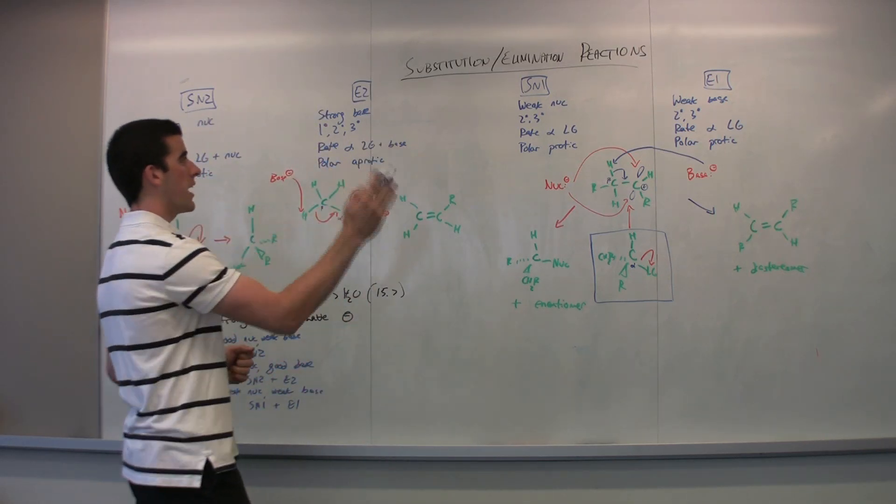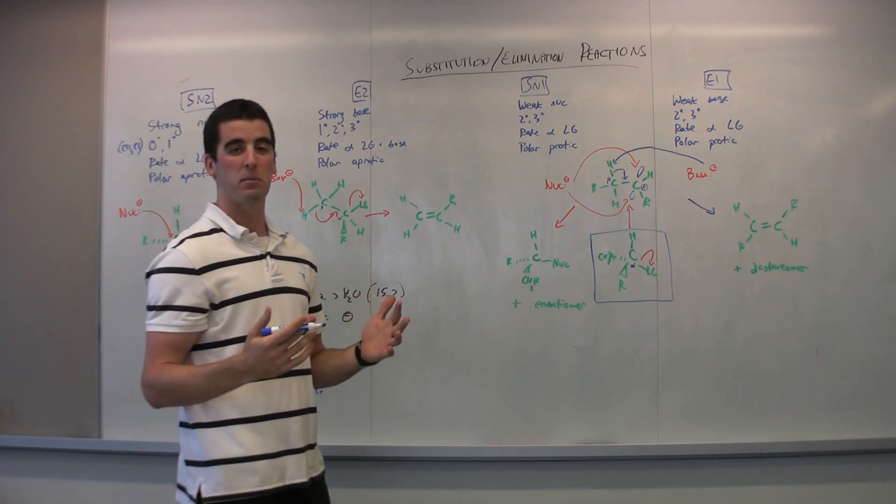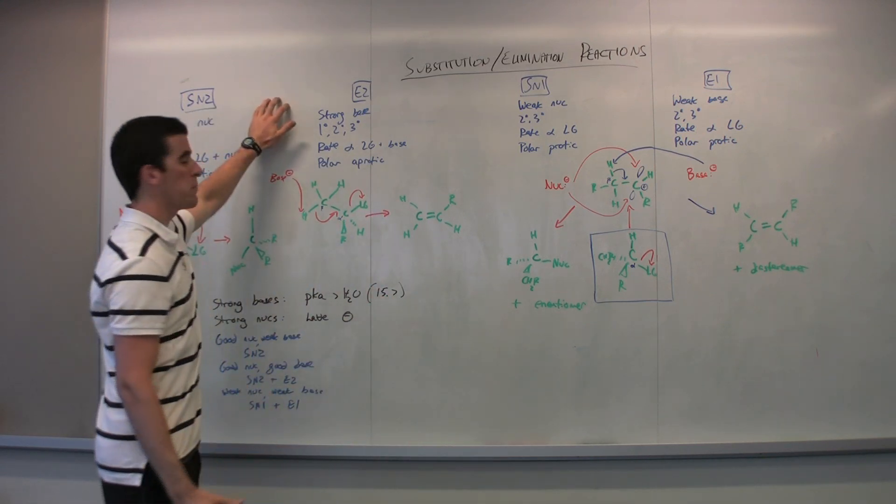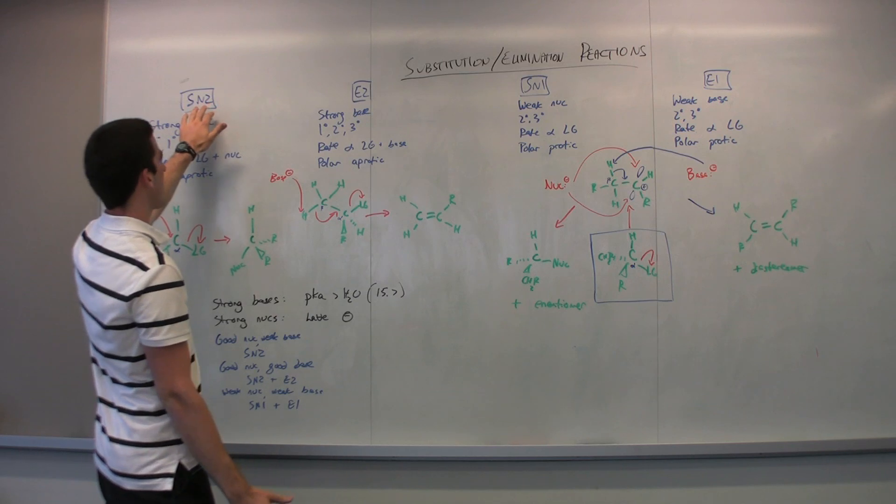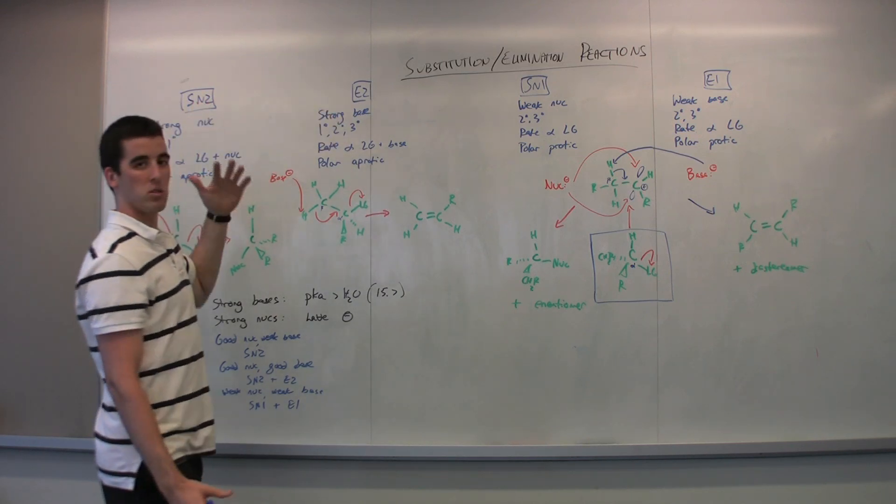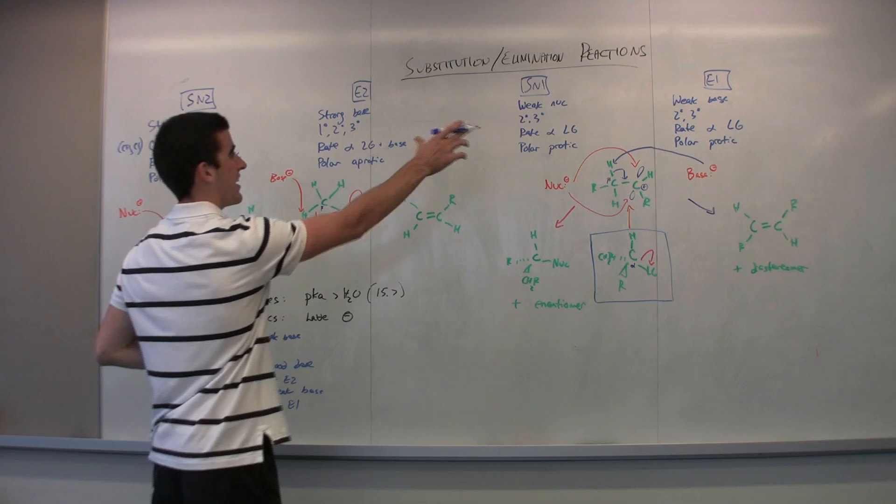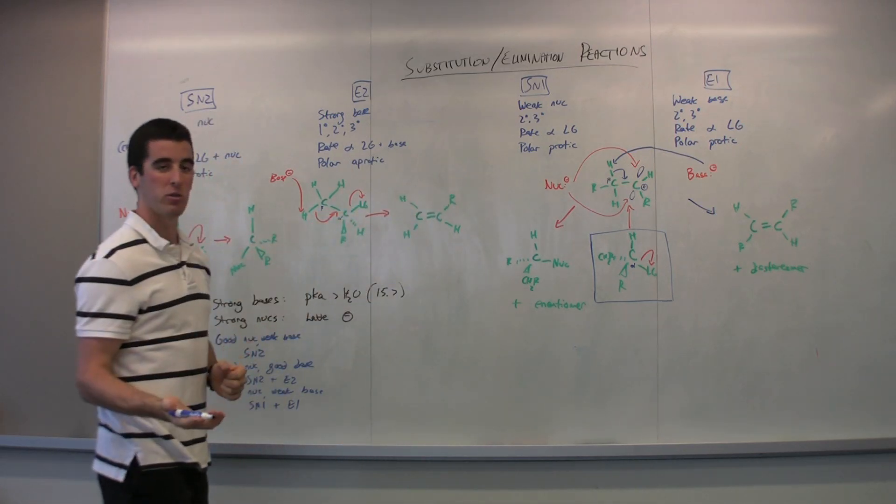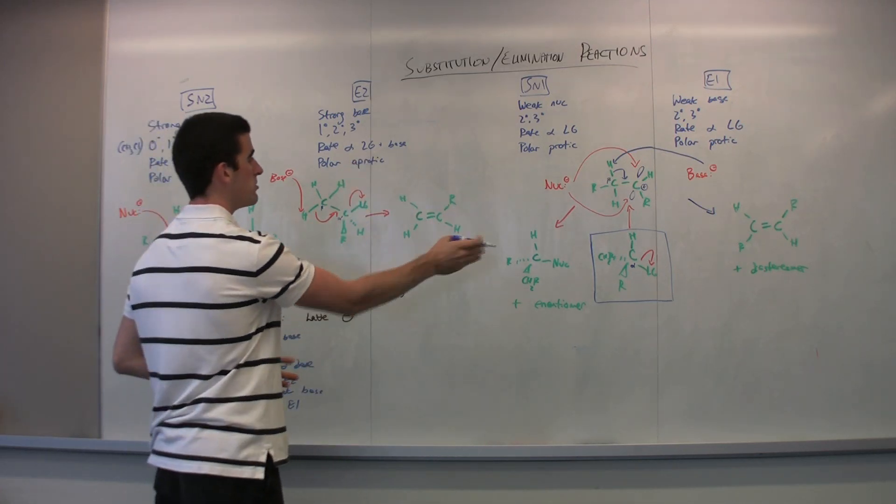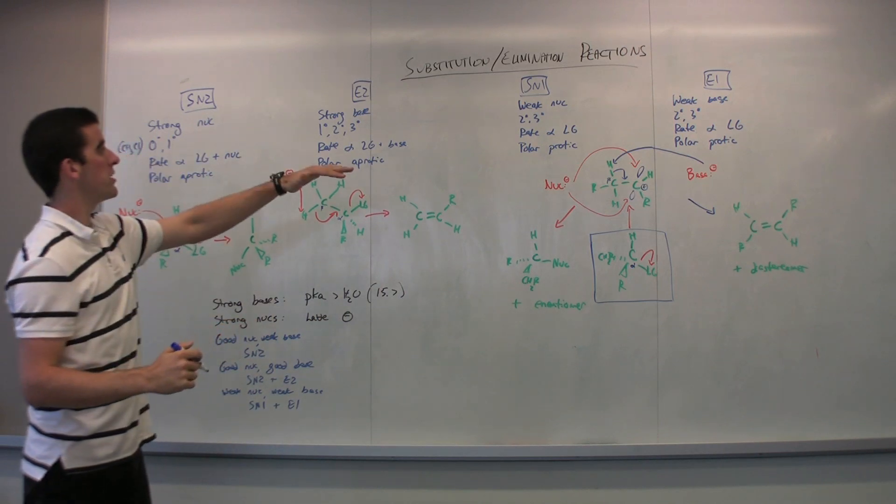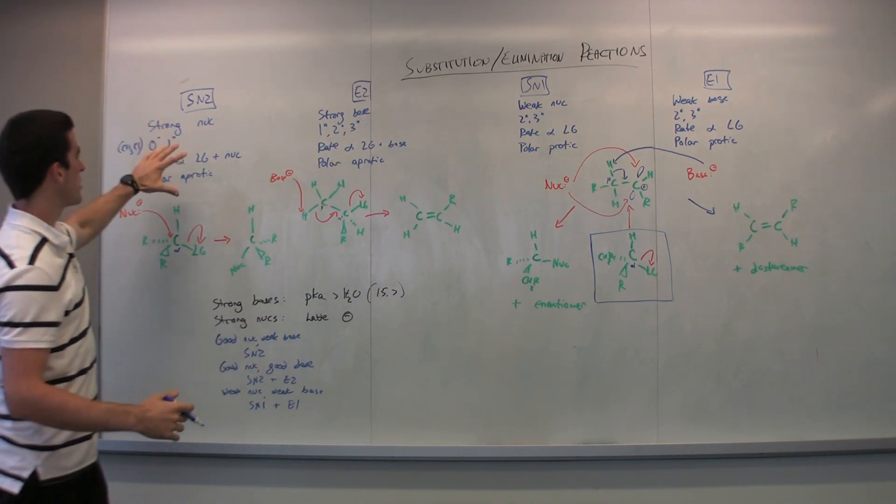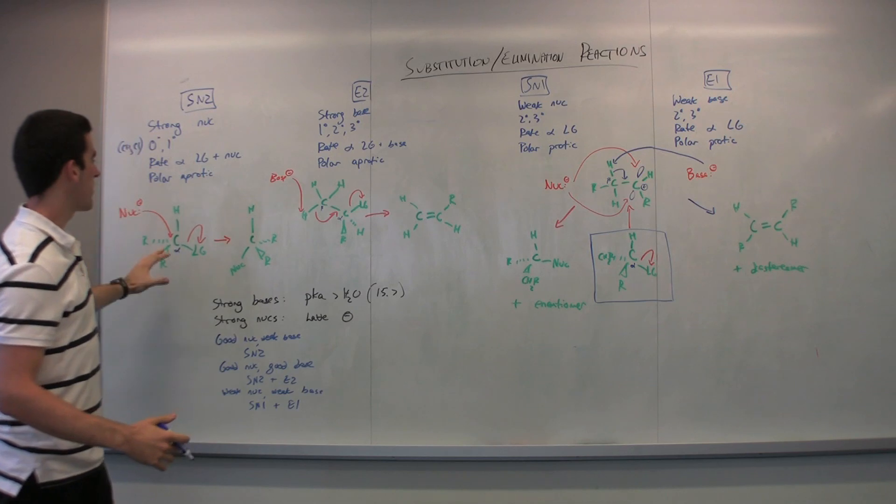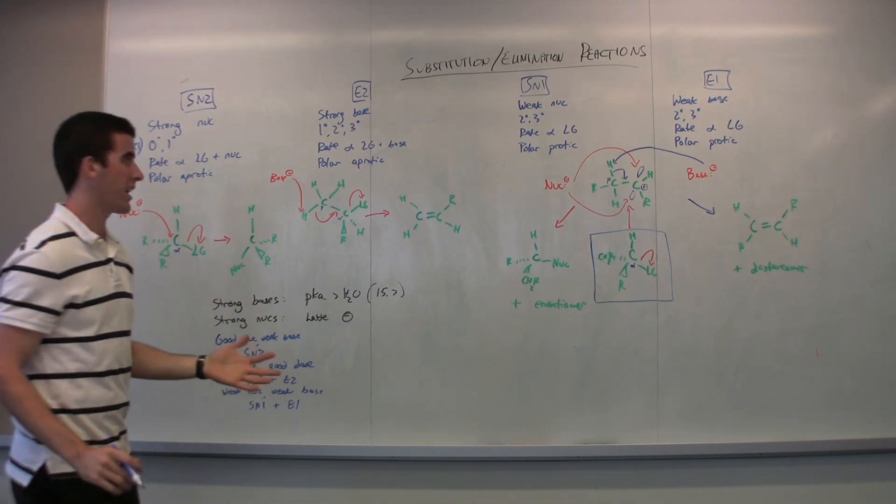So I've written up here the four reactions you will see, substitution and elimination reactions. These two here are the bimolecular reactions and that's indicated by the two at the end of SN2 or E2. So bimolecular meaning one step and SN1 and E1 are the unimolecular reactions and this is indicated by two steps there. Let me go through each reaction and show you what it actually entails and the mechanisms of what's going on in each reaction.